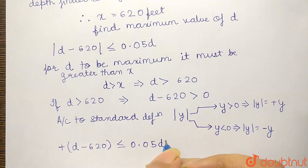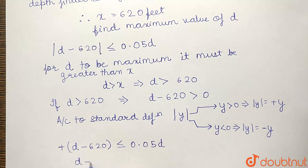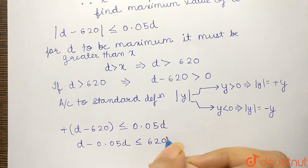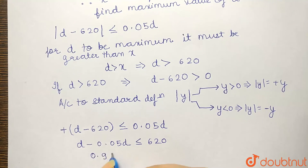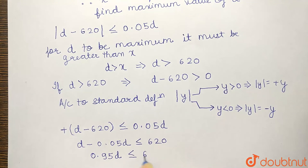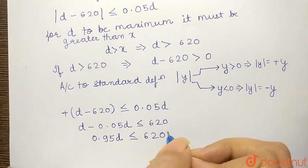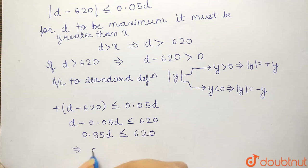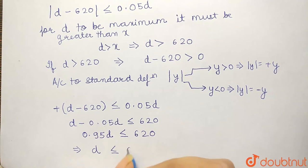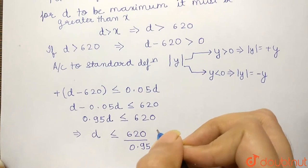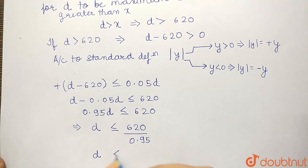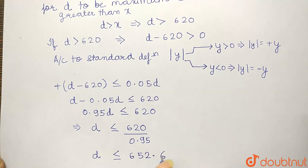Now, we can rearrange this equation to get that D minus 0.05D should be less than equal to 620. D minus 0.05D would be 0.95D should be less than equal to 620, which further implies that D should be less than equal to 620 divided by 0.95. We calculate this and we will get that D should be less than equal to 652.6.